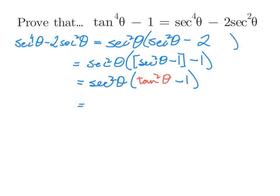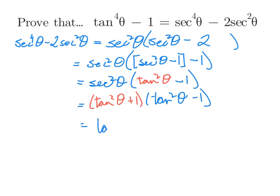We can also apply a Pythagorean identity to secant squared: secant squared equals tangent squared plus one. So we have (tangent squared plus one) times (tangent squared minus one). These are conjugates, so multiplying them gives a difference of two squares: tangent squared squared minus one, which is tangent to the fourth minus one. And there is the left side of our identity.